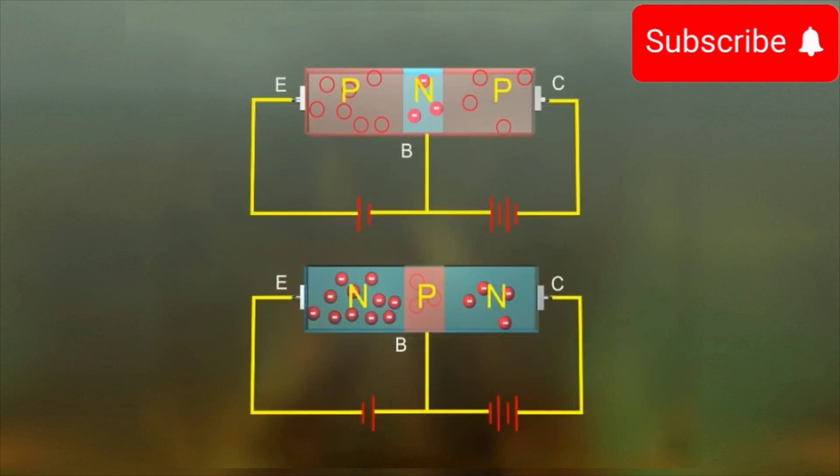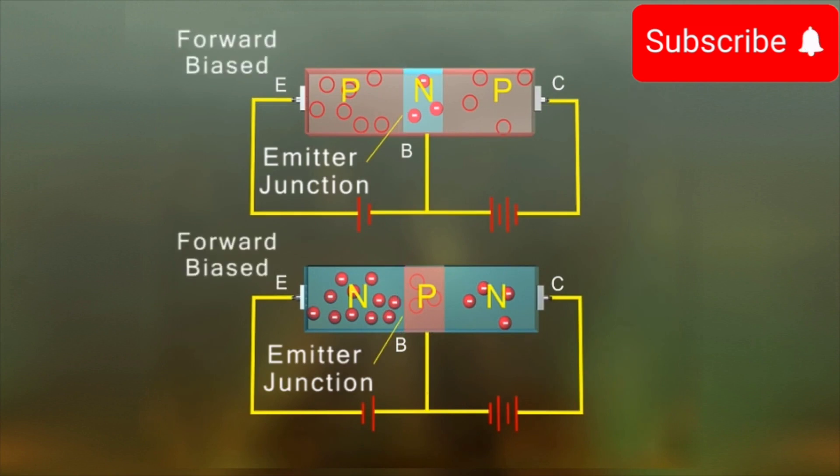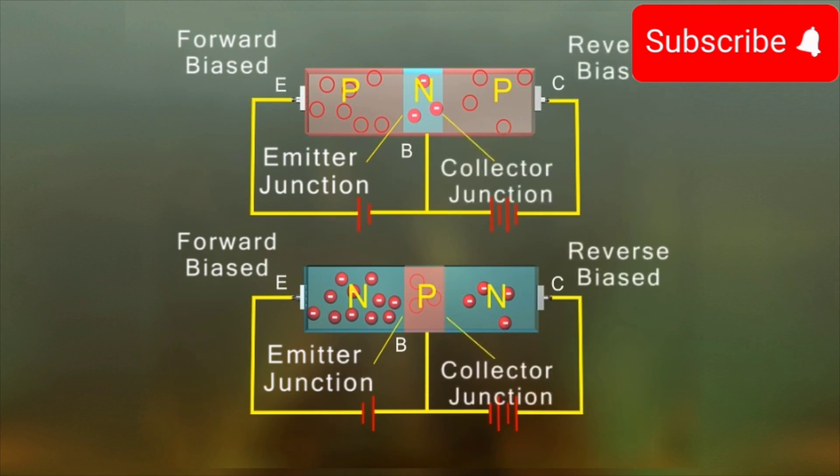In practical transistor circuits, the junction formed by emitter and the base, i.e. the emitter junction, is forward biased. And the junction formed between collector and the base, i.e. the collector junction, is reverse biased.